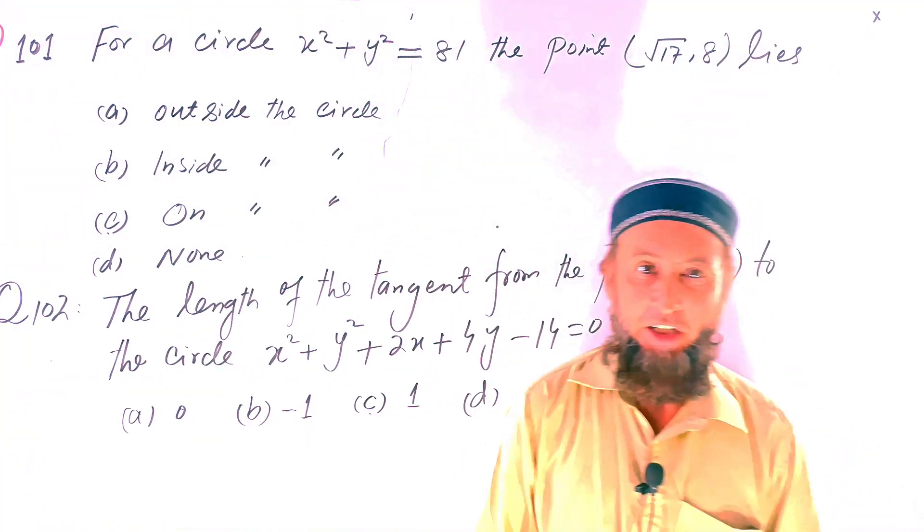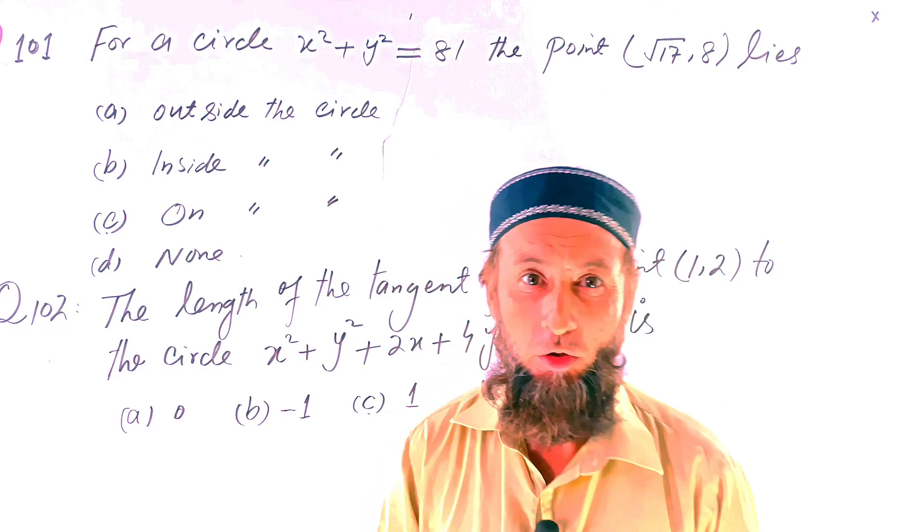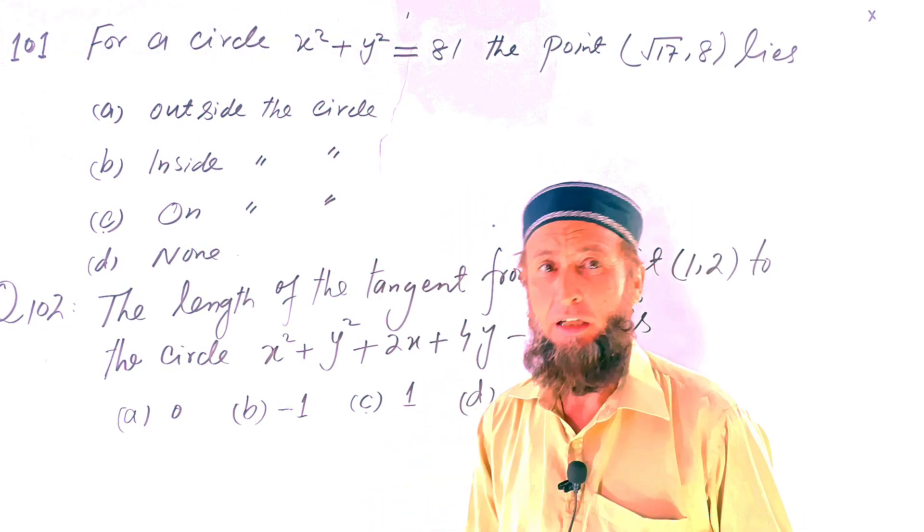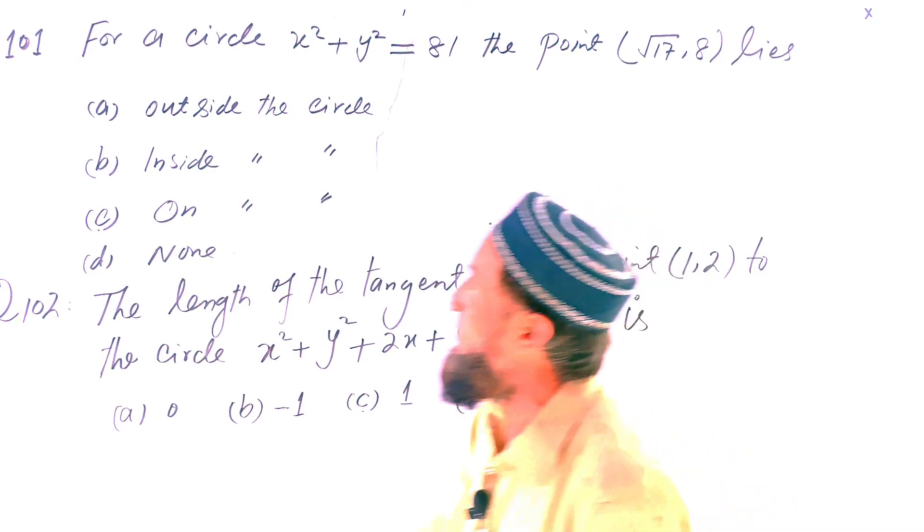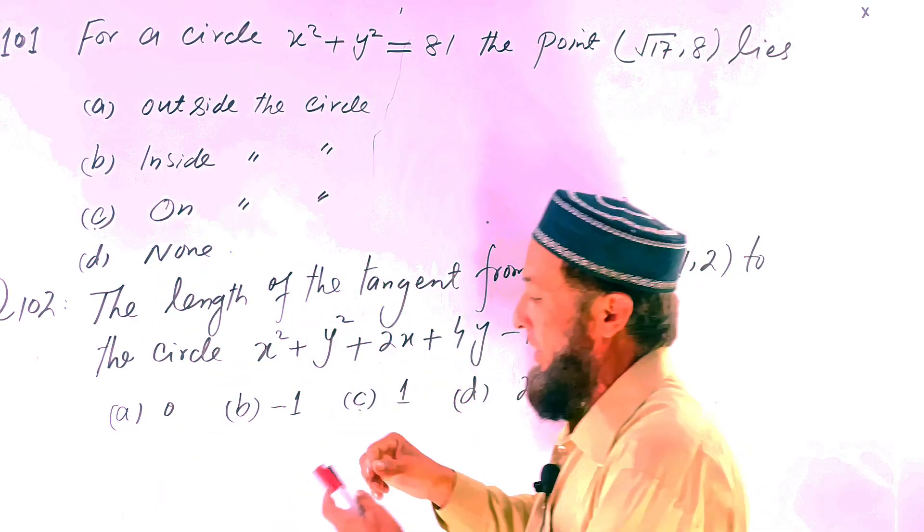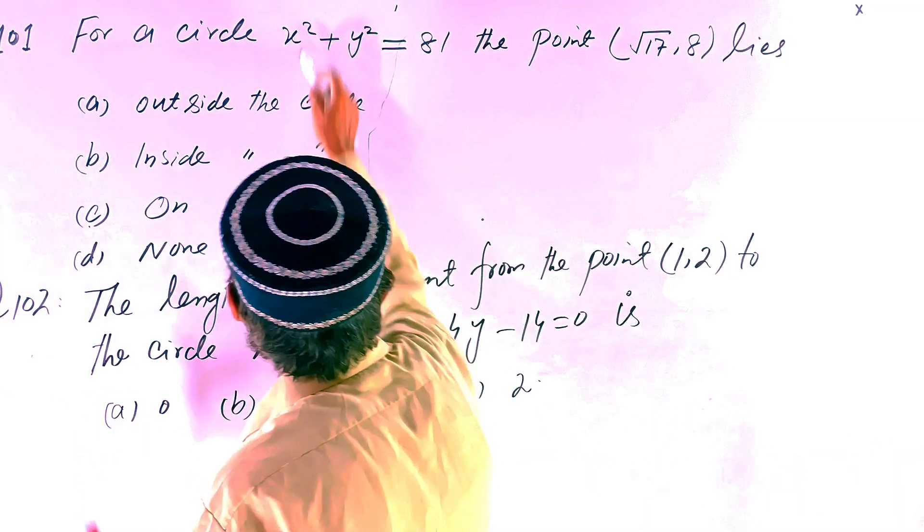Hello, assalamu alaikum to all Indian students. I hope all of you will be good. Today we are proceeding with MCQs on the topic of circles. Question number 101: For a circle x² + y² = 81, does the point (√17, 8) lie outside the circle, inside the circle, or on the circle?